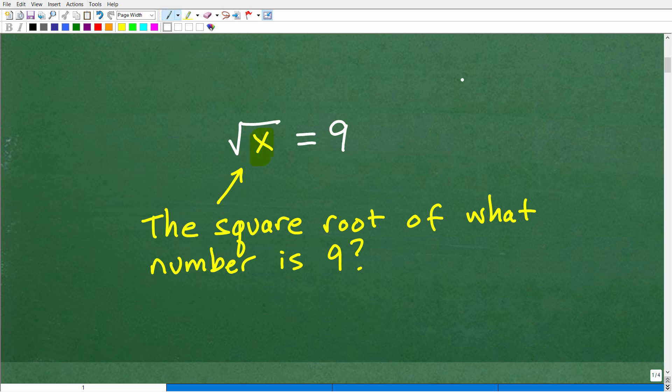Well, X is a variable and variables in algebra, whether it's X, Y, Z, A, it doesn't make a difference. What do these things represent? They're just numbers. So variables just represent numbers. So really, what this is saying from like an English sentence type of expression is, the square root of what number is equal to 9?